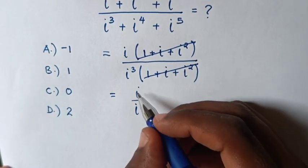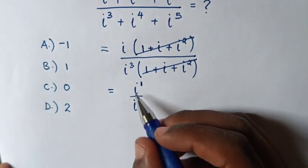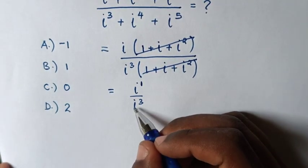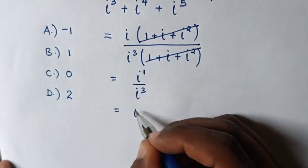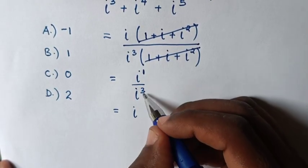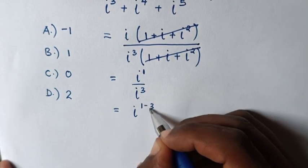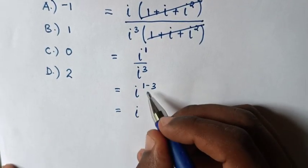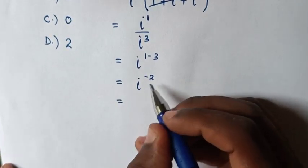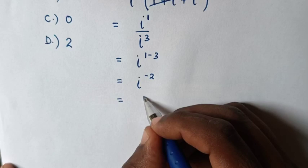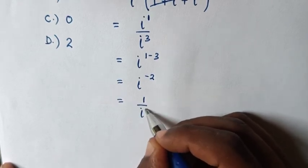Here i is the same as i¹. Since we have division of exponents with the same base but different powers, this equals i^(1-3), which equals i^(-2).